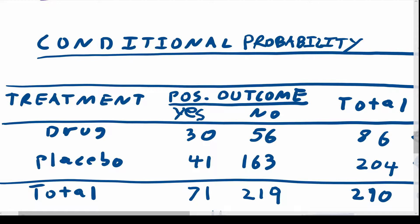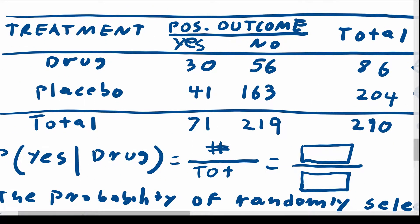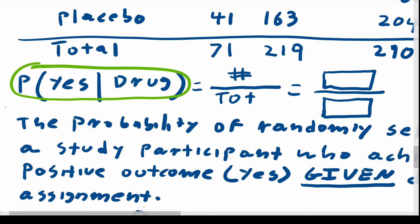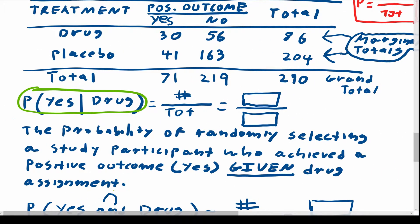So conditional probability uses the word given. And the word given in the language and symbolism of conditional probability is represented by a vertical line. So let's say we wanted to determine what this symbolism here means: P, parenthesis, yes, vertical line drug. What does that even mean? If you want to read this technically correctly, this should be read as the probability of randomly selecting a study participant who achieved a positive outcome given drug assignment.